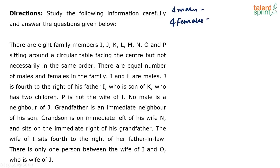Now, they are saying that I and L are male. I'll just write that down so I don't miss any information. Then, J is 4th to the right of his father, I, who is the son of K, who has 2 children. Before doing the arrangement, let me first try to get the relationship diagram.